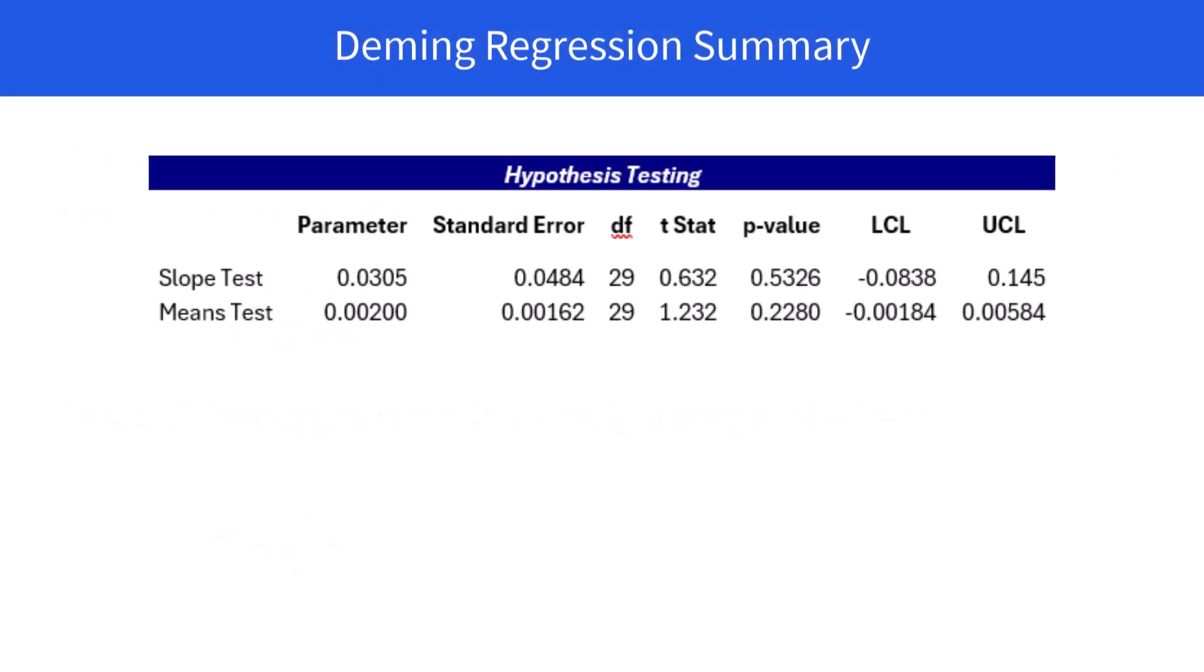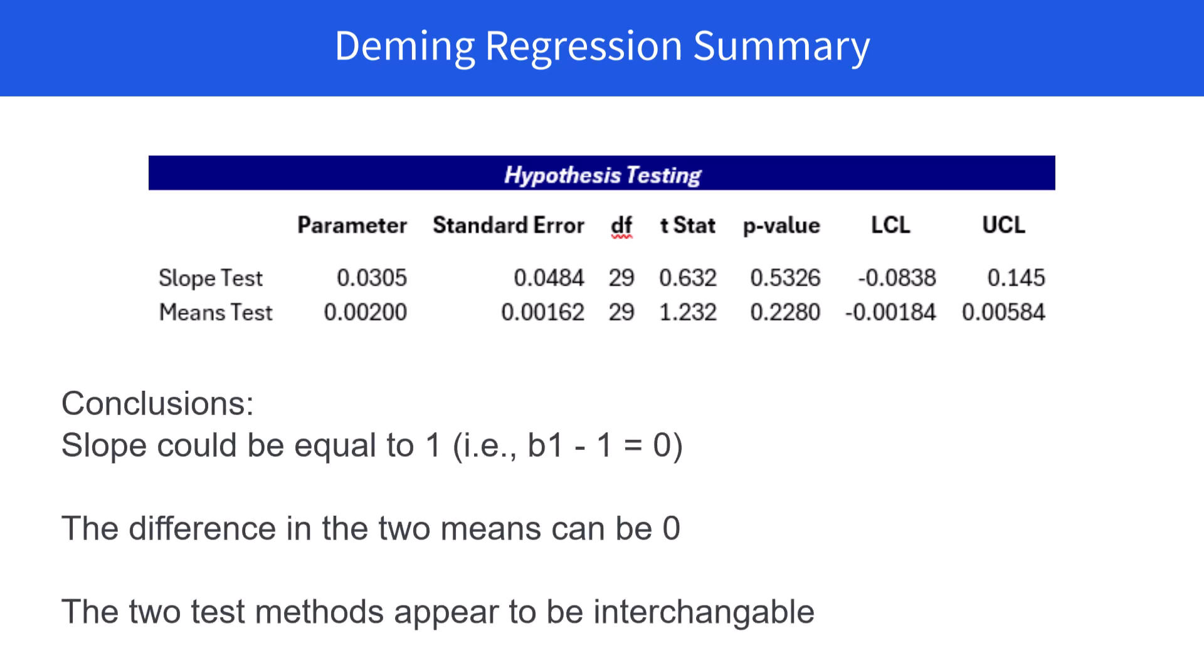And here's the output from the SPC for Excel program. Our conclusions are that the slope could be 1 because the upper and lower confidence interval contains 0. The means could also be 0 because the upper and lower confidence for the means contains 0. The two methods appear to be interchangeable.